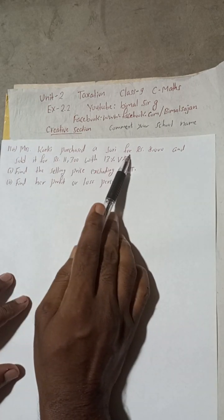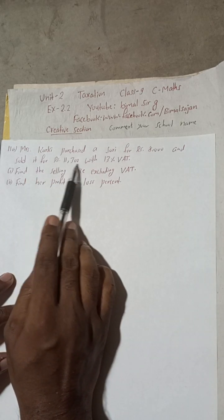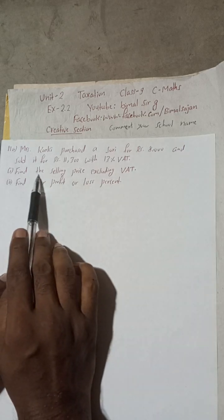Mrs. Karki purchased a sari for Rs. 8000 and sold it for Rs. 11,300 with 13 percent VAT. Find the selling price excluding VAT. Find her profit or loss percent.